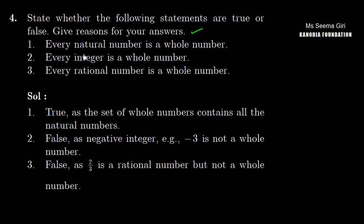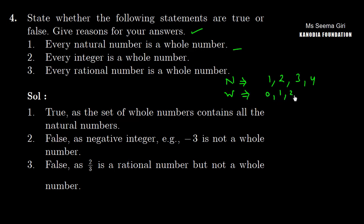Every natural number is a whole number. This is TRUE, as the set of whole numbers contains all the natural numbers. Natural numbers start from 1, 2, 3, 4 — these are all natural numbers. And whole numbers are 0, 1, 2, 3... So this statement is true.